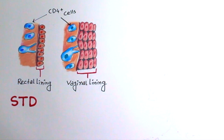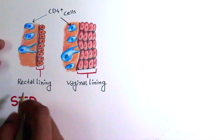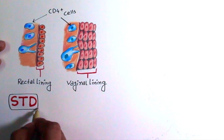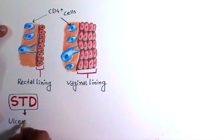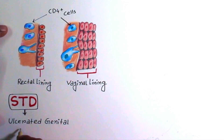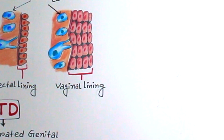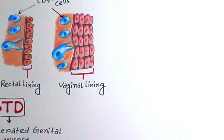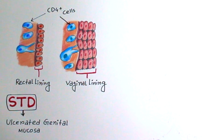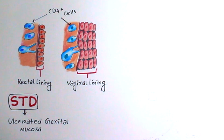People who already have STDs are prone to HIV infection because of the ulcerated genital mucosa, which helps the virus enter deep into the tissue. Several studies suggest that treating other STDs and genital syndromes may help prevent the transmission of HIV.